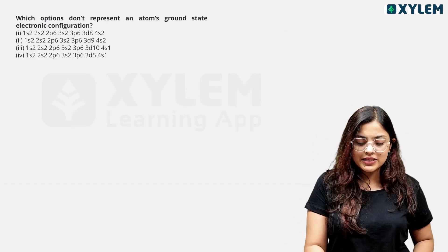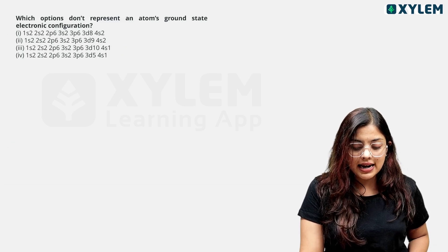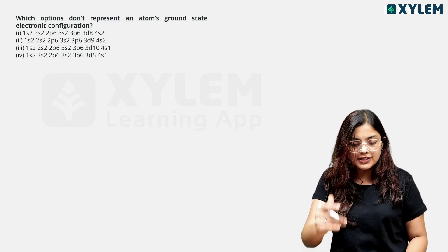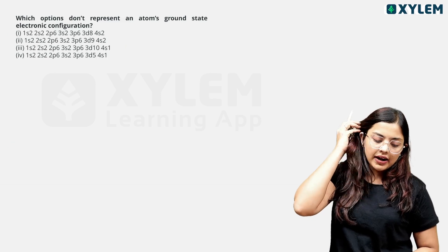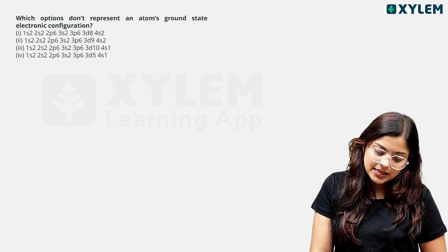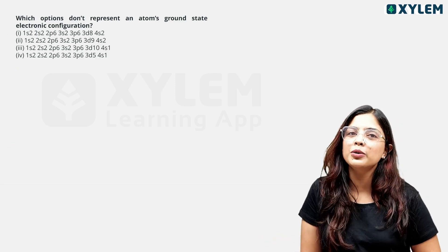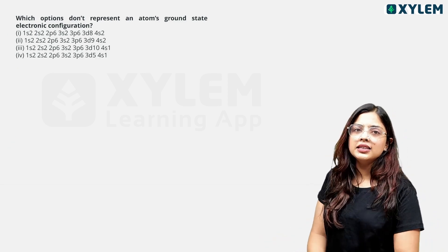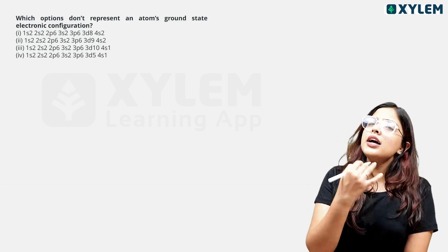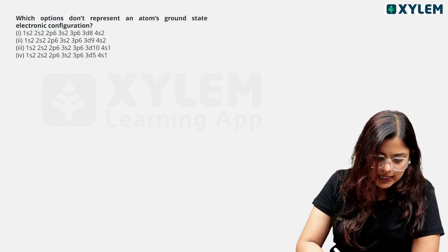This is the next question: which options do not represent an atom's ground state electronic configuration? First option: 1s2, 2s2, 2p6, 3s2, 3p6, 3d8, 4s2. That is a normal ground state electronic configuration.